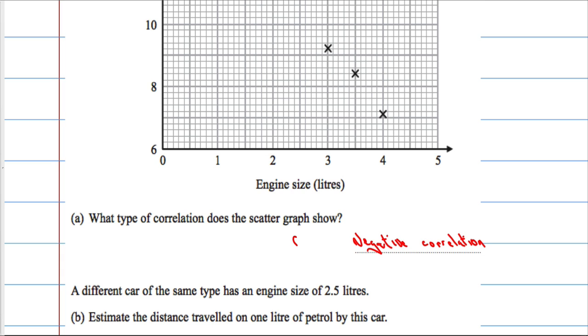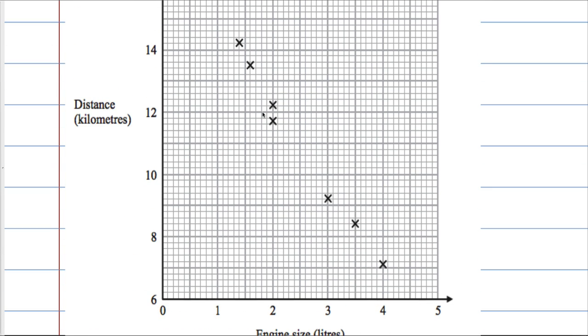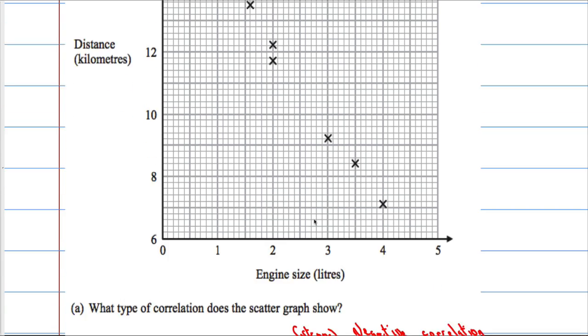You could also say it's strong negative correlation, strong because the dots are fairly close together — or the crosses.